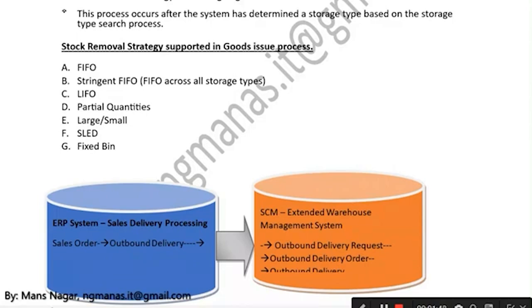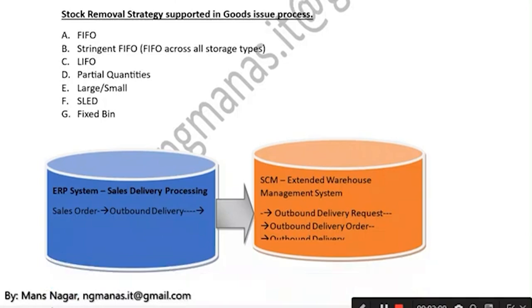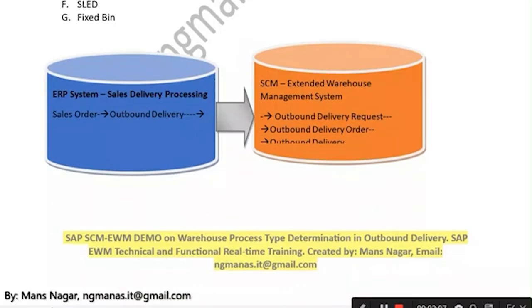Stock removal strategy supports the goods issue process with several methods: First In First Out (FIFO), First In First Out across all storage types, Last In First Out (LIFO), and partial quantities for large or small quantities, as well as SLED and fixed bin strategies.